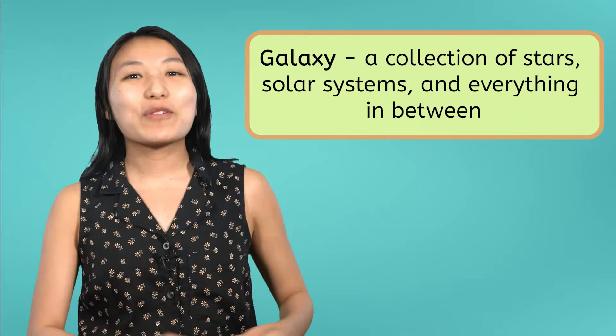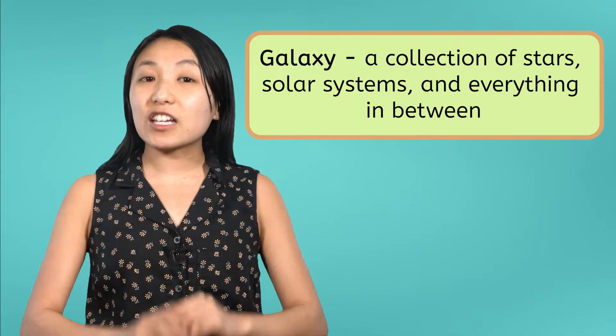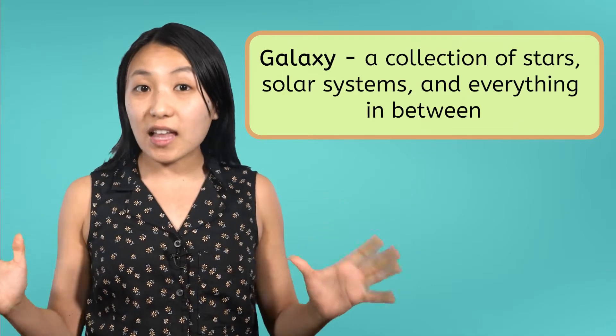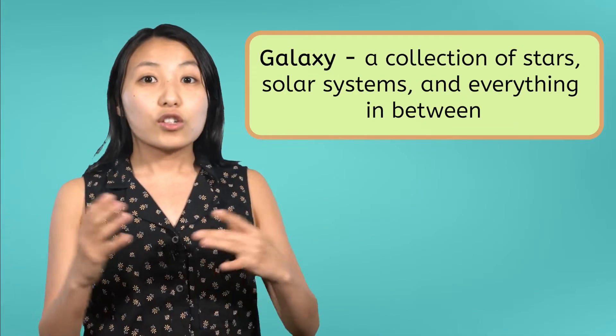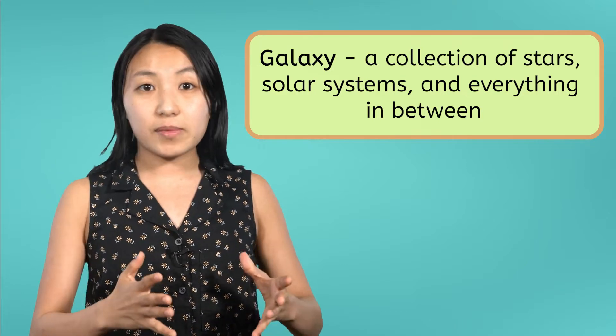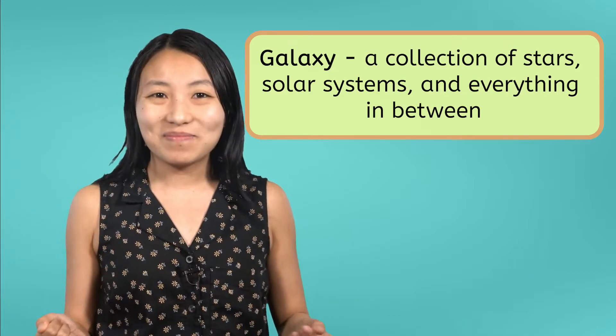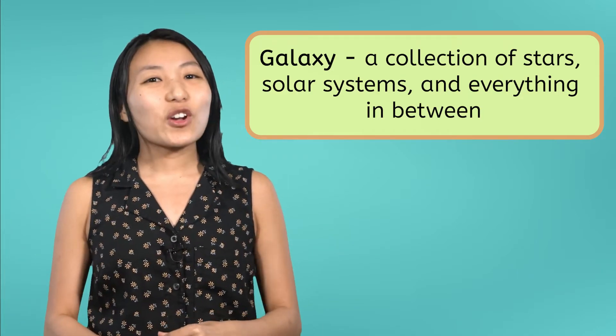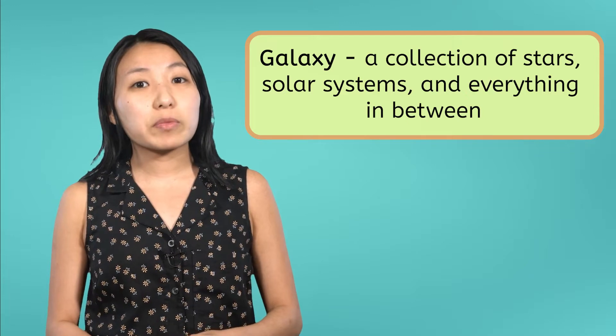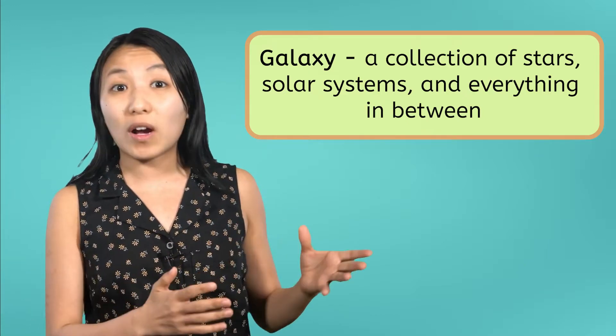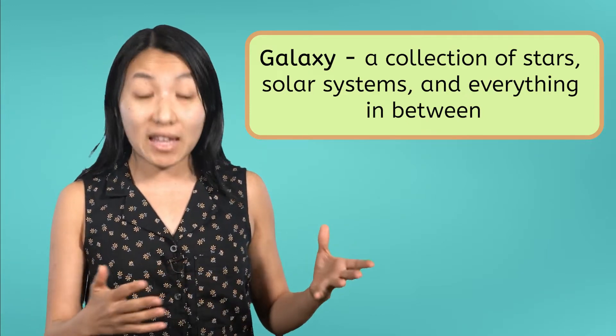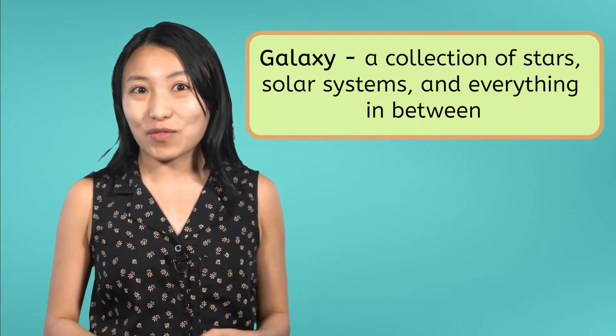As you may remember, a galaxy is a giant collection of stars, solar systems, and everything in between. Astronomers estimate that there are somewhere between 100 and 200 billion galaxies in the universe. With that many galaxies, how can astronomers possibly keep track of them?